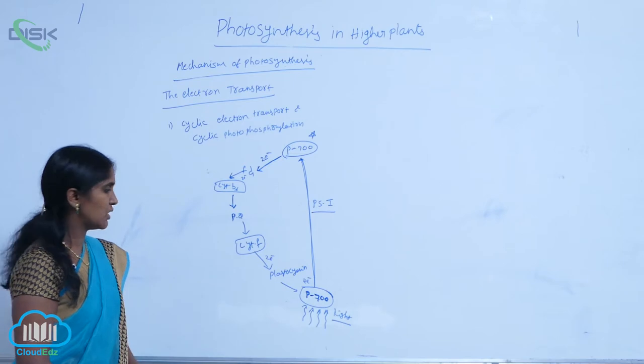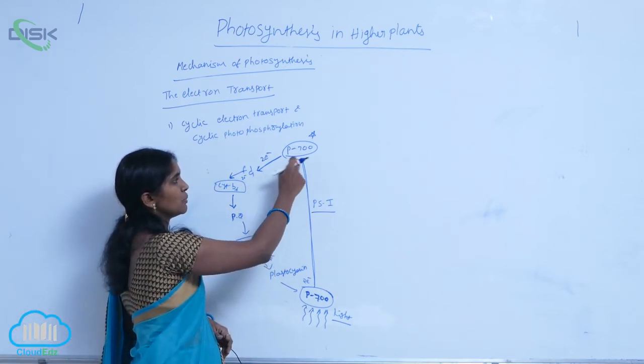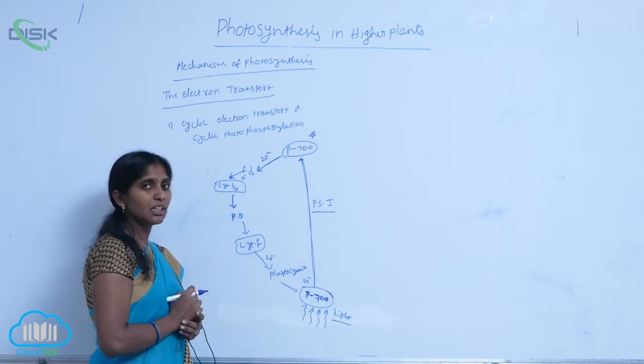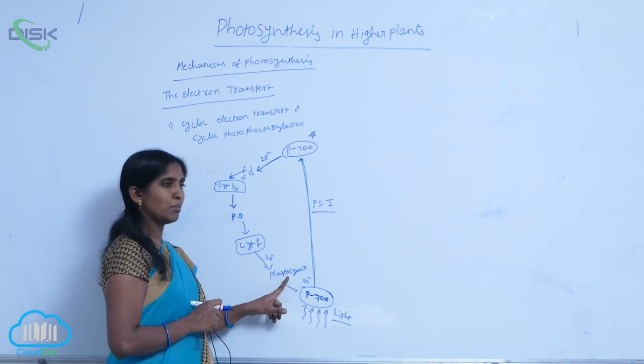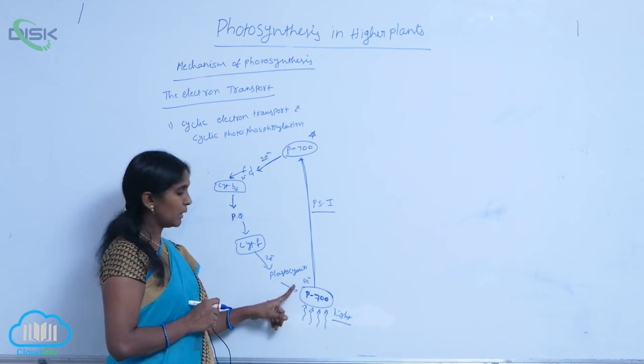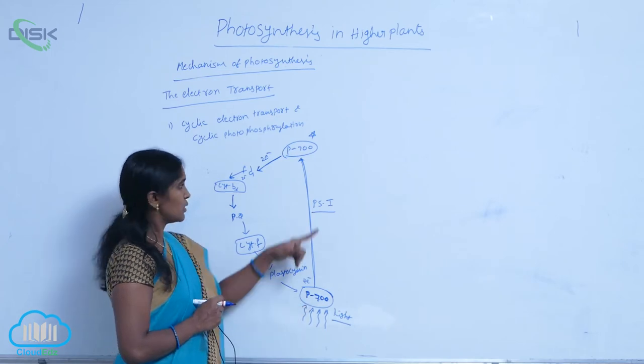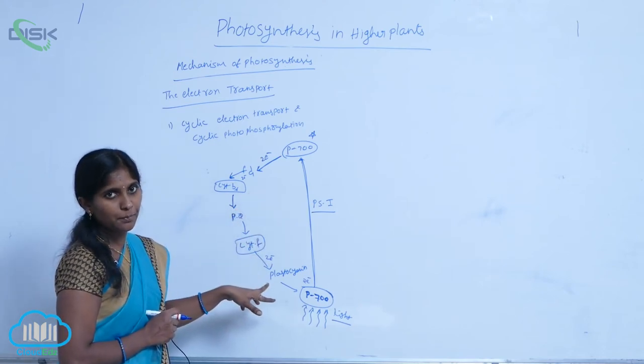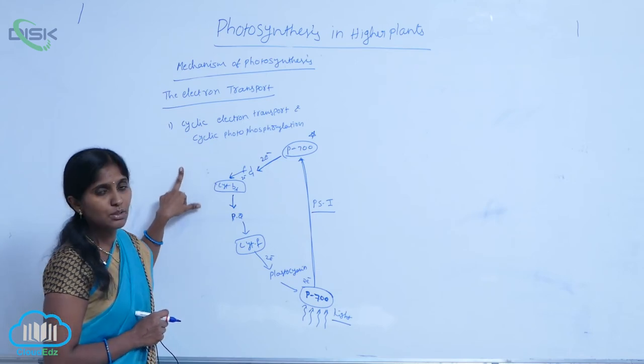By losing two electrons, P700 gets oxidized. Then it gets reduced again by taking the two electrons back from plastocyanin. The electron transport occurs in a circular manner, which is why it's called cyclic electron transport.